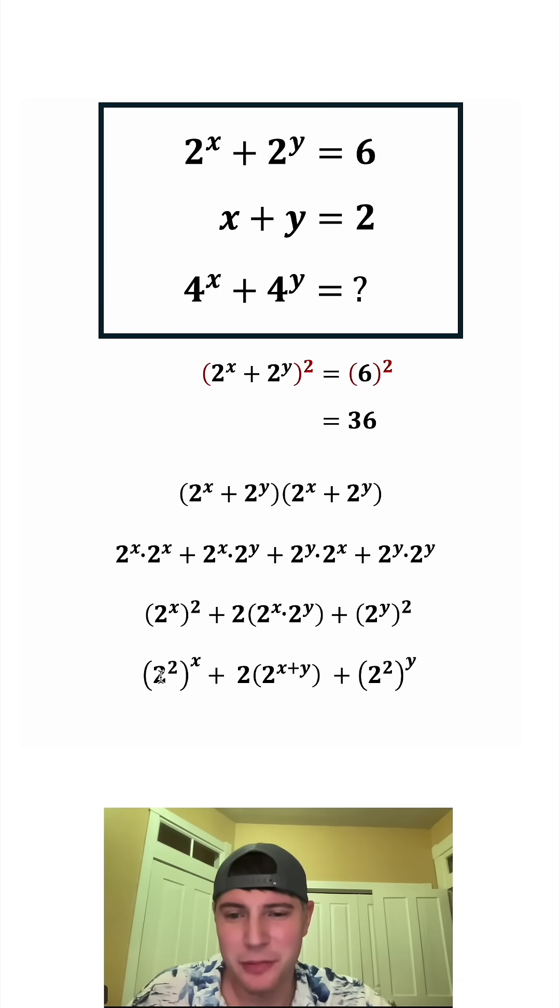So now for the first term, this 2 squared in the parentheses is equal to 4. And then for the middle term, let's copy it down. And then for the third term, this 2 squared in parentheses is 4. So this whole thing became 4 to the x plus 2 times 2 to the x plus y plus 4 to the y.